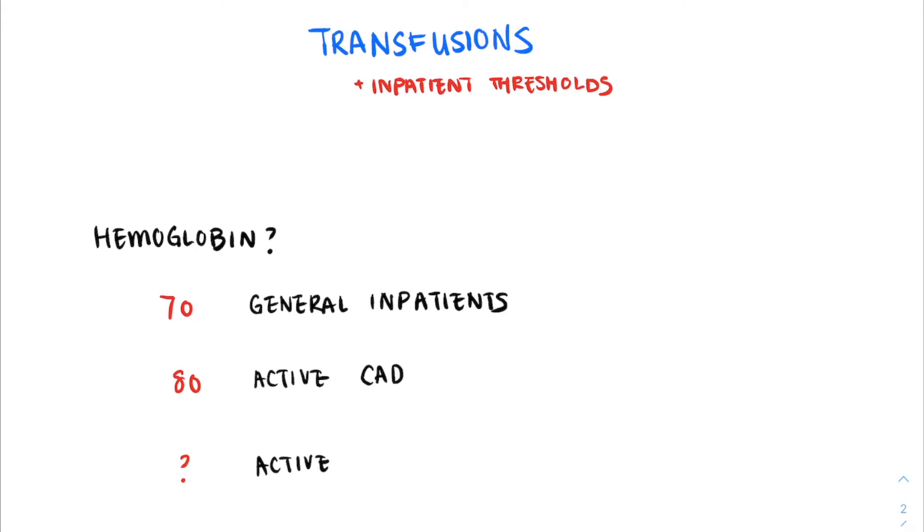But there isn't a specific threshold we use for patients who are actively bleeding because this depends on the reason they're bleeding, their rate of bleeding, and their underlying comorbidities. Generally we use a higher target somewhere along the lines of 80 to 100.